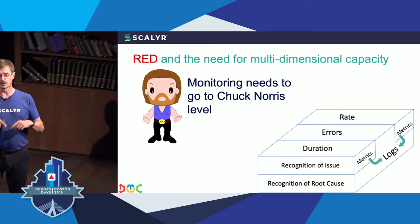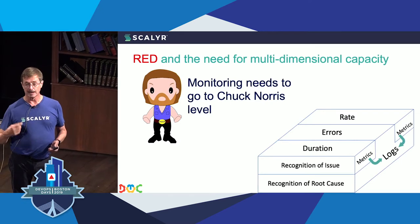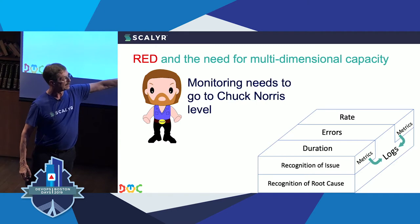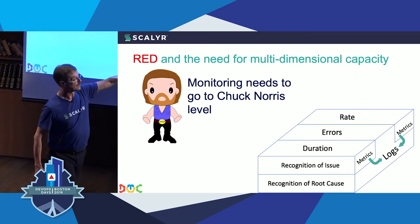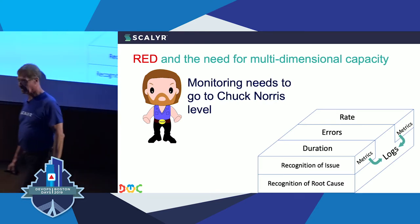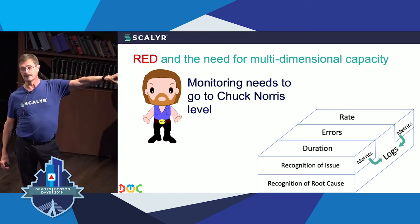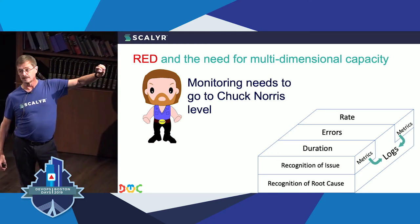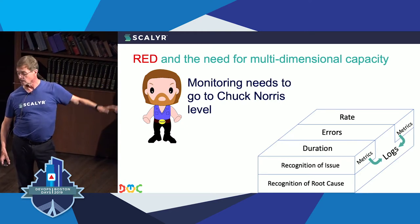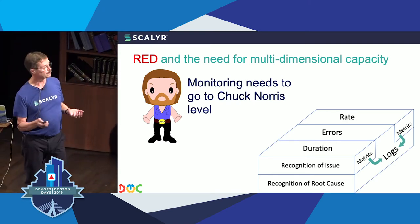RED takes monitoring to a new level. RED gives you Rate-Error-Duration functionality to recognize the issue as well as dig in and recognize the root cause. You can look at these things using metrics, log capability, and traces that cross boundaries. Different signals like Twitter feeds and stack traces all come together and make this part of the overall process.